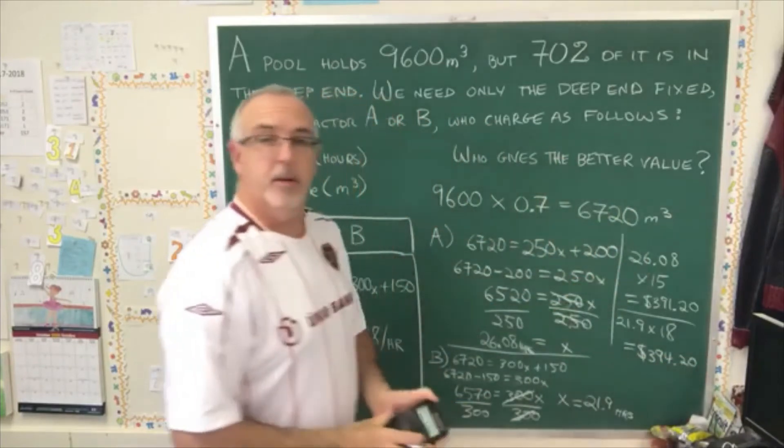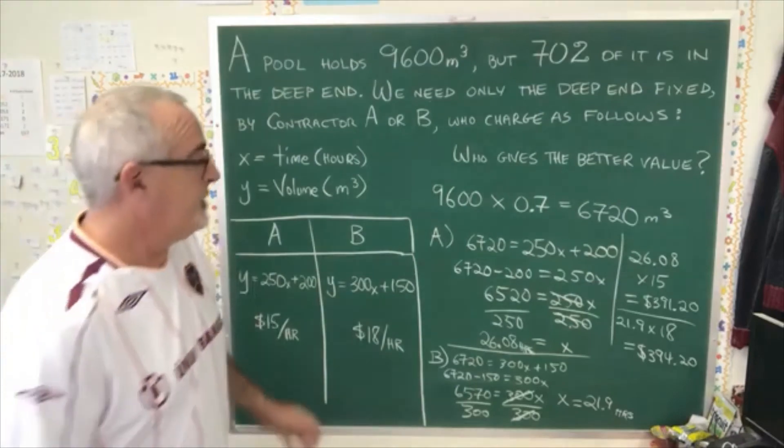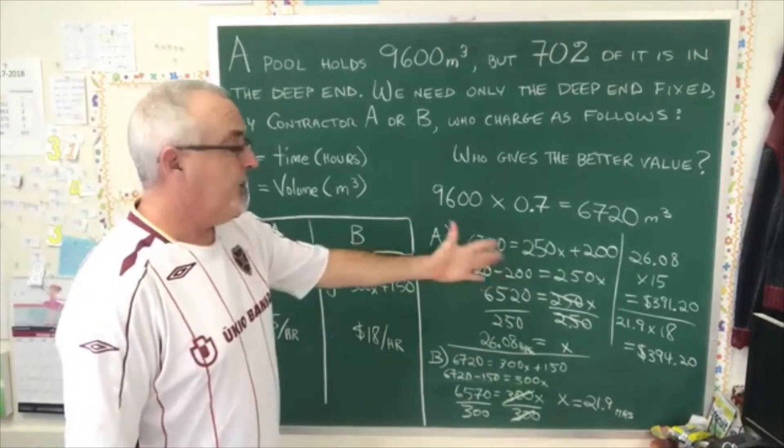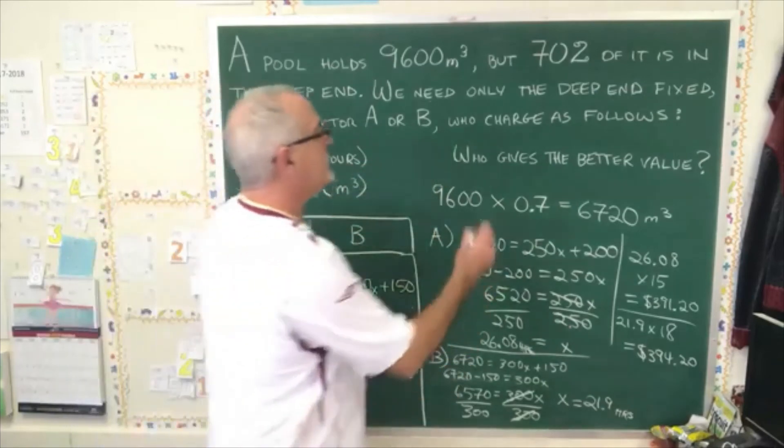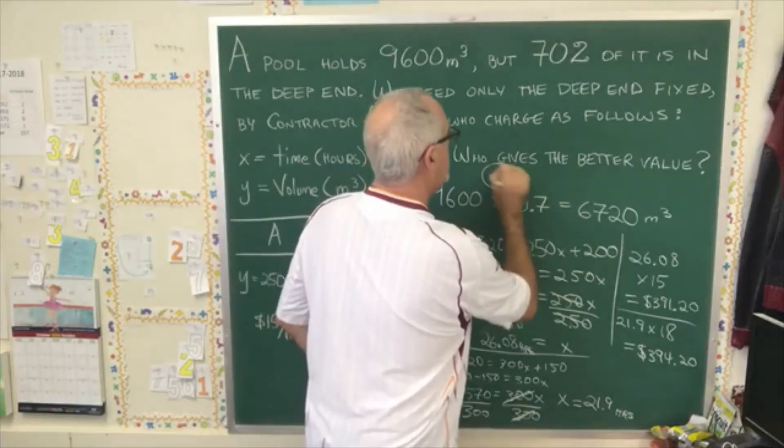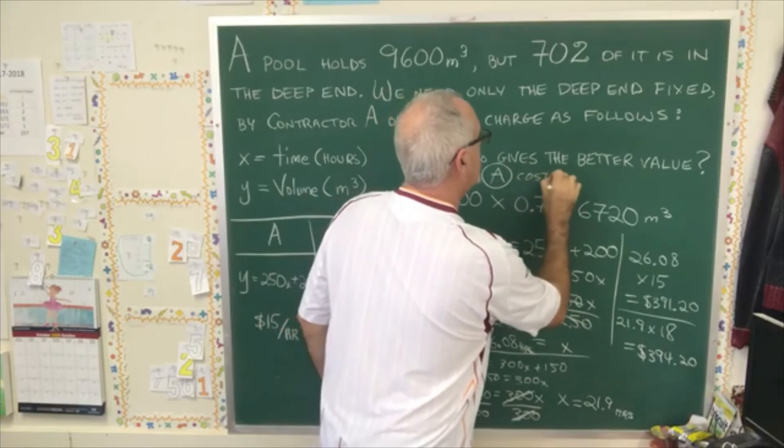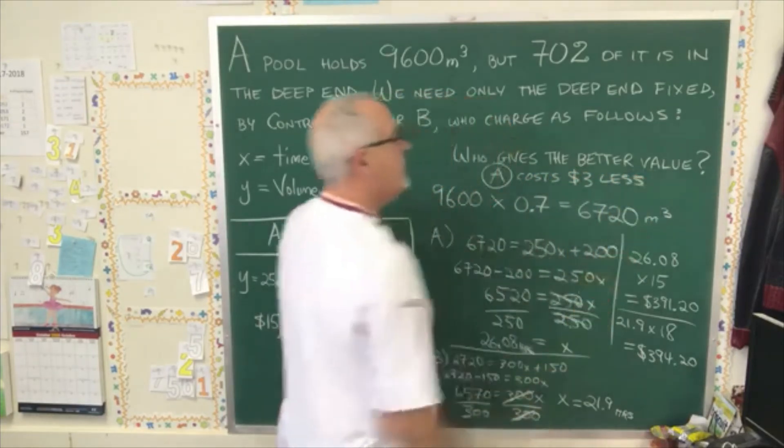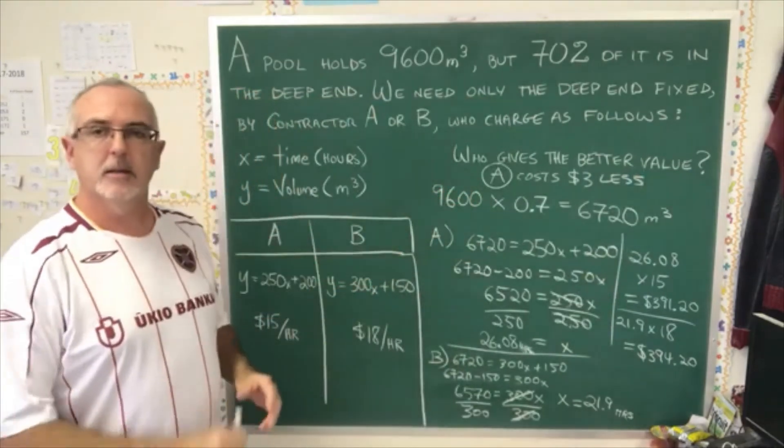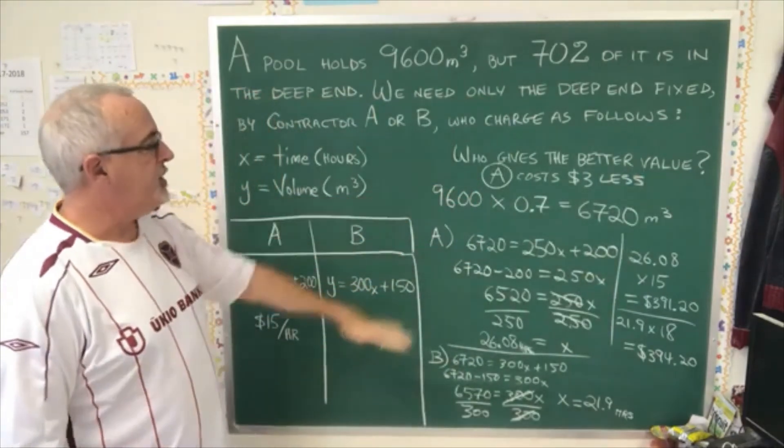But A ends up costing less by just $3.00. So therefore, the final answer to the question is, A costs $3.00 less, or any other good complete sentence style answer to the question.